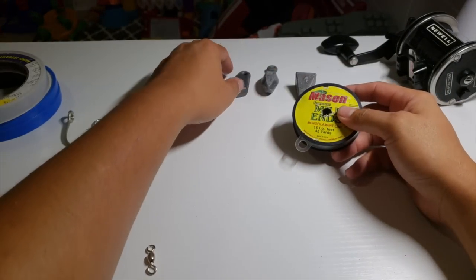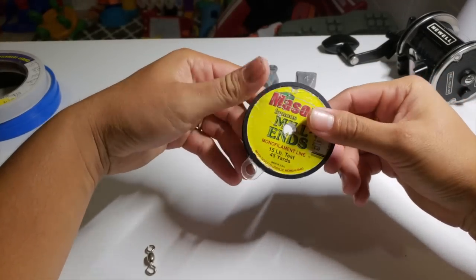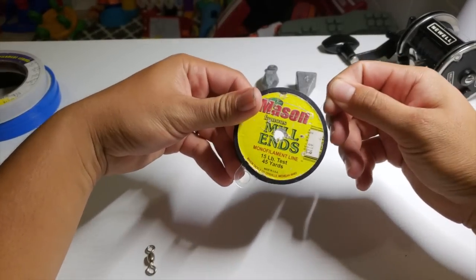Depending on the size of your lead will determine how big or how heavy your pound test is going to be for your lead line. The next thing we're going to go over after the swivel is the lead.